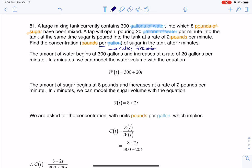So what I did here was I modeled the water with W(t) = 300 + 20t because you started with 300 gallons of water and you're gaining 20 gallons per minute. So the units on this function are gallons. That's how many gallons of water I have at any minute. I started with 300, a minute later I have 320, two minutes later I have 340 gallons, then 360, and so on.